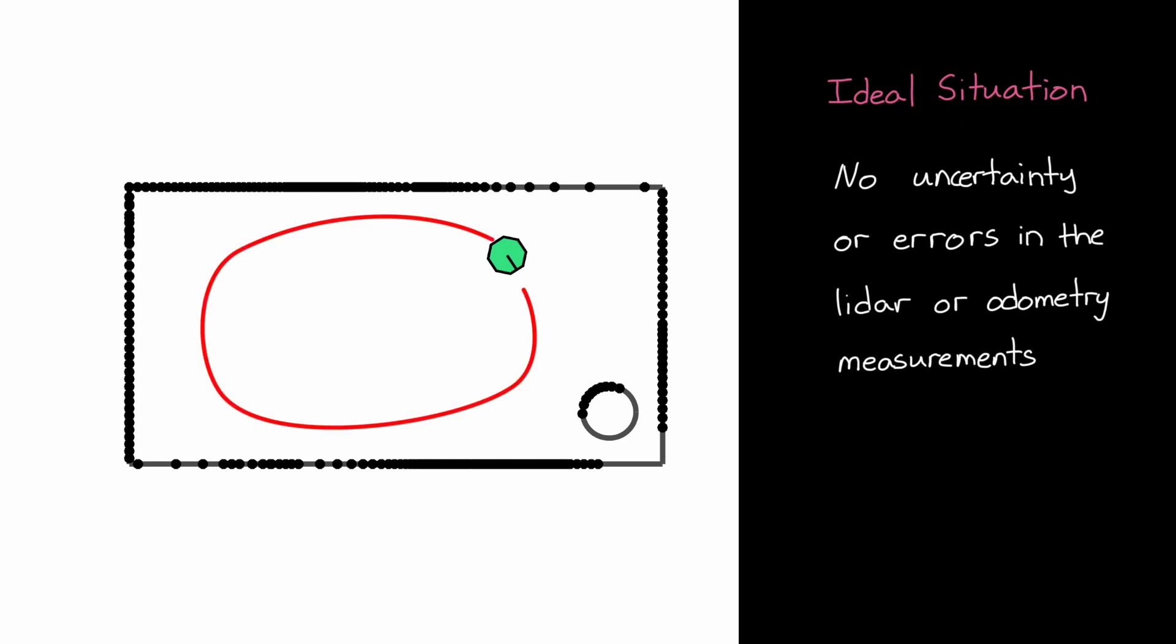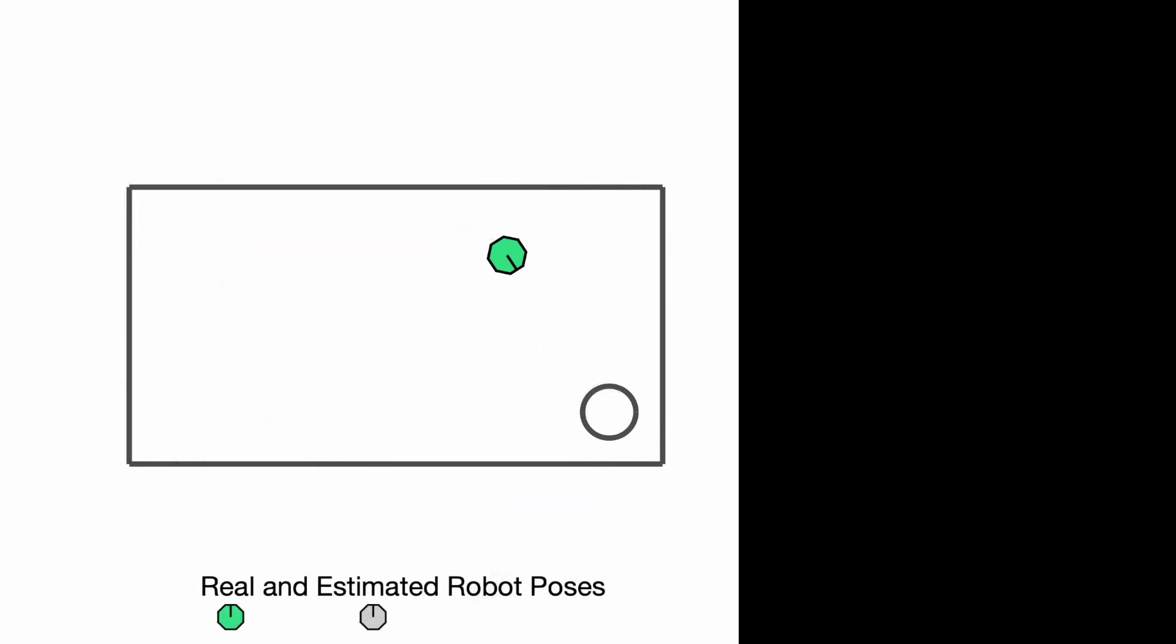Of course, this scenario isn't realistic. There's error in both the LIDAR measurement and in the odometry, so there's some uncertainty in the estimated robot pose and in the distances to the measured objects. So let's try to map this room one more time. But this time we'll say that the LIDAR is still pretty accurate, but there's a large uncertainty in the odometry measurements. I don't know, maybe one of the wheels keeps slipping, so the robot thinks it's moving in a different direction than it actually is.